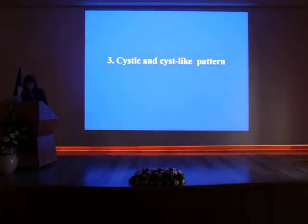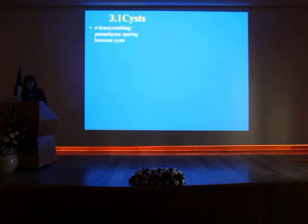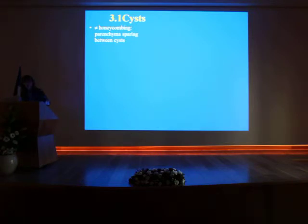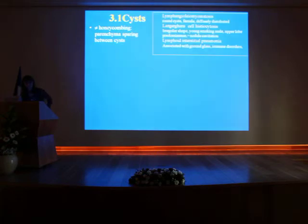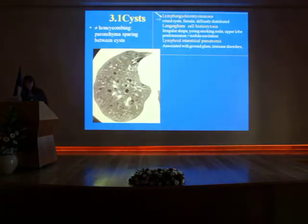The third pattern is the cystic and cyst-like pattern. Again, there are three things to remember — three distributions for micronodules and three types of septal lines, so remember the number three. Three diseases with cyst formation: the first is lymphangioleiomyomatosis, observed only in female patients, where you will find round cysts that are diffusely distributed within the lungs.